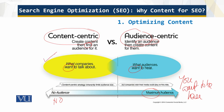On the other side of the optimization equation is the technical stuff. This involves factors like keywords, meta titles, meta descriptions, and URLs. We want to talk about how to actually create optimized content — optimized content for the audience. This is what we want.